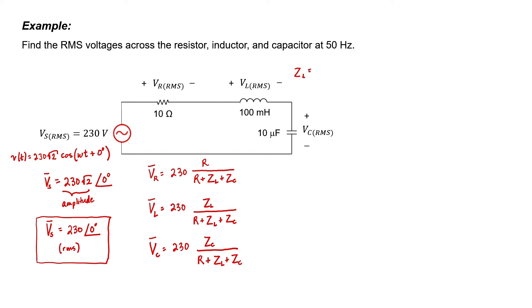The impedance of an inductor is j omega L, and we're told that the frequency is 50 hertz. So the impedance of the inductor here is 31.42j ohms. The impedance of the capacitor is just 1 divided by j omega C. The impedance of this capacitor is negative 318.3j ohms.